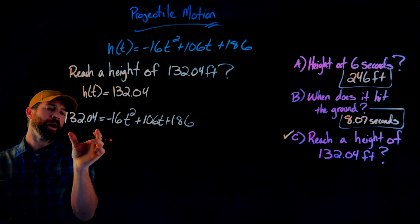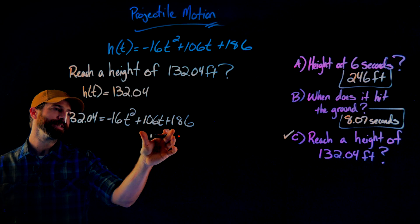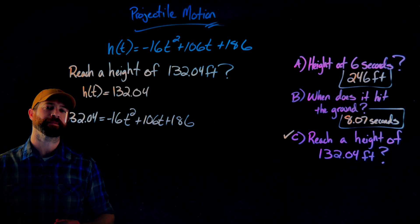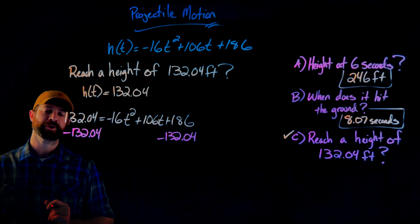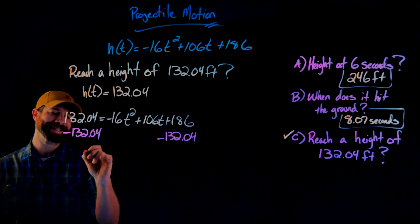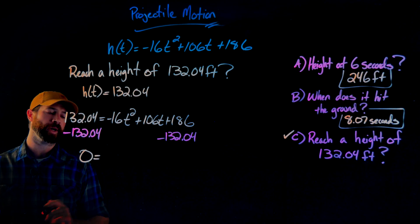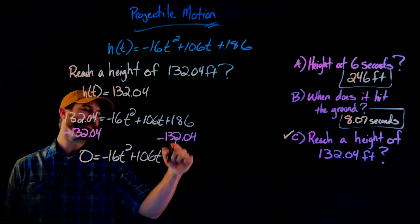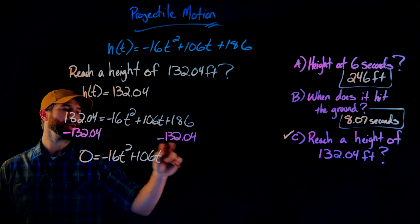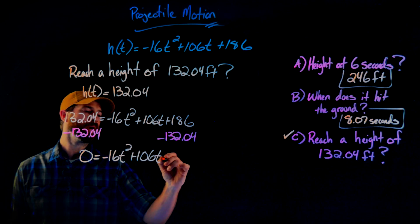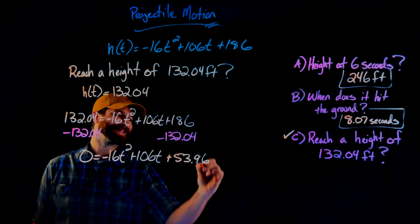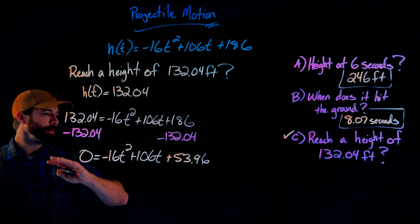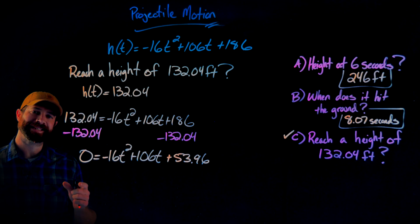The only difference is our quadratic equation right here is not set equal to zero. We first need to subtract 132.04 from both sides. When I subtract 132.04 from both sides, I finally get a zero here, which I need for the quadratic formula. The only coefficient that gets affected is this C value. When I take 186 and subtract 132.04, what I get is 53.96. Now that I've set it equal to zero, I'm going to plug this into the quadratic formula as I did before.